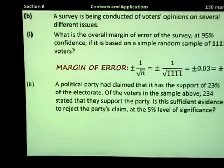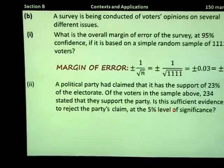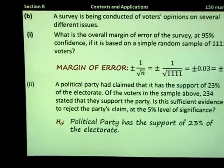Next, a political party has claimed that it has the support of 23% of the electorate. Of the voters in the sample above, 234 stated that they would support the party. That's 234 out of 1,111. Is this sufficient evidence to reject the party's claim at the 5% level of significance? This is hypothesis testing. First, we're going to state our null hypothesis. Our null hypothesis here would be that the political party has the support of 23% of the electorate.